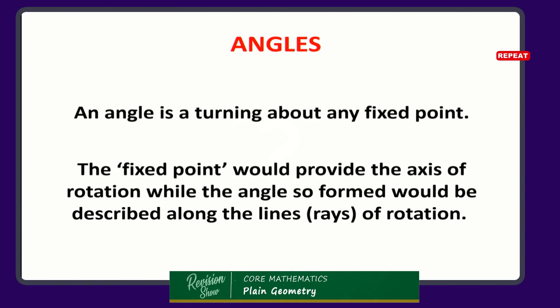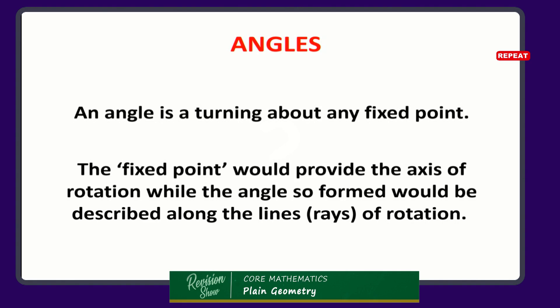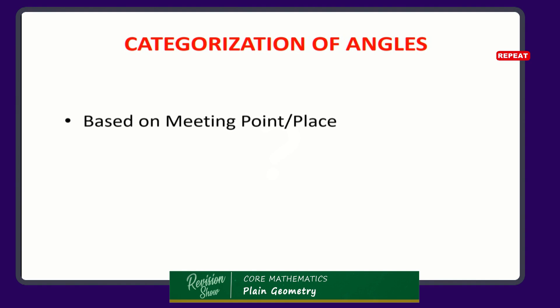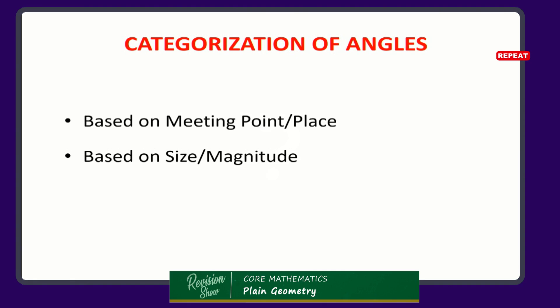An angle is formed when two rays or more meet at a fixed point. We call that fixed point by different names, including the fixed point or the vertex. How do we categorize angles? We can categorize angles based on their meeting point or meeting place. We can categorize angles based on their size or magnitude — how big or how small they are. We can also categorize angles based on their relationship with other angles.